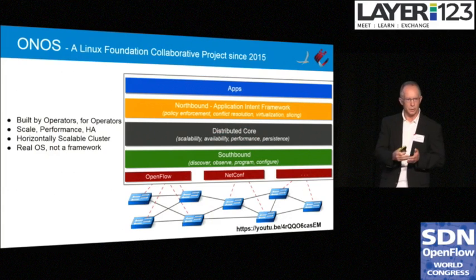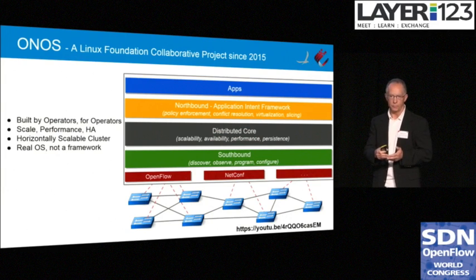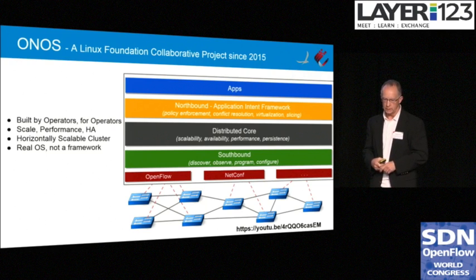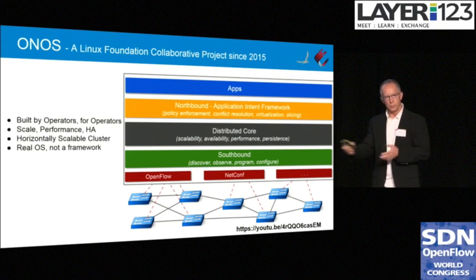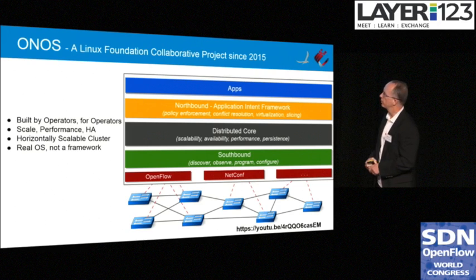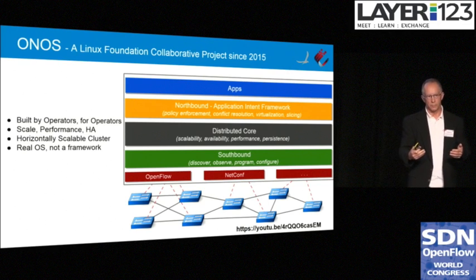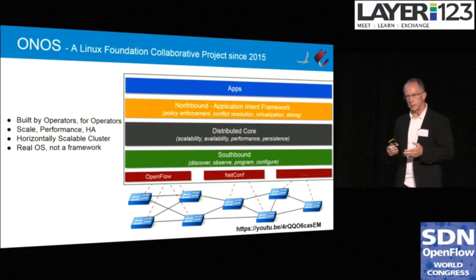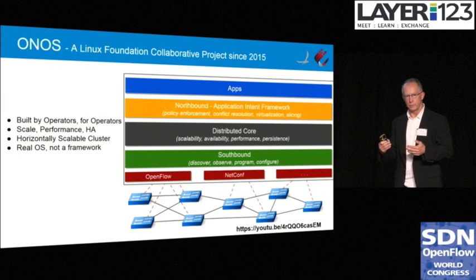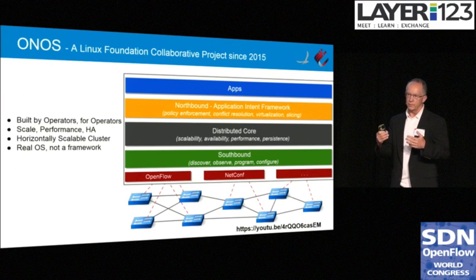ONOS achieves HA, scale, and performance by running as a clustered system, so you can run three, five, or seven servers and they all work together in a cluster. They shard the network so that you can very easily scale to the number of devices in your network. It's a real operating system — it provides real services, it has very strong layering and a set of abstractions to simplify how you write applications at the northbound. Also very strong abstractions at the southbound to make it easy to add devices into the network.